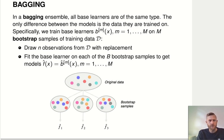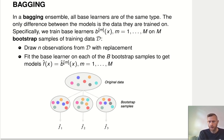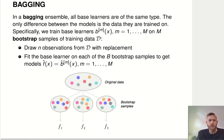So how does bagging work? In a bagging ensemble, all the members of the ensemble are models — base learners of the same type. So you do a bagging of tree base learners or a bagging of linear regression base learners. The only difference between the different ensemble members, the different base learners, is that they're always trained on slightly different versions of the training data.